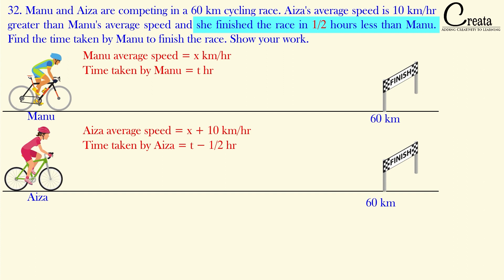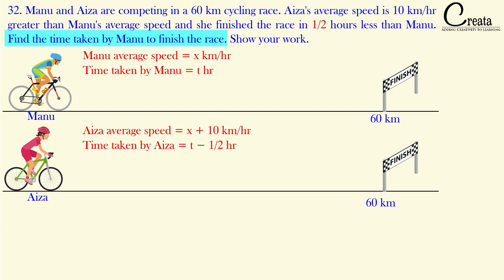In this question, we have to find the time taken by Manu to finish the race — that means we have to calculate t. The formula of speed and distance will be used: distance equals speed multiplied by time.